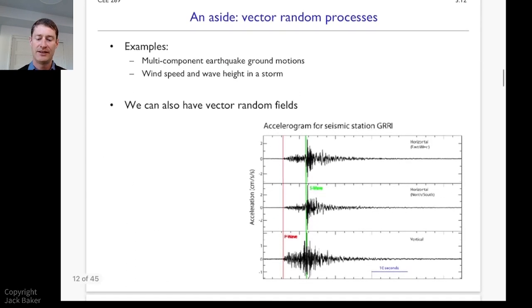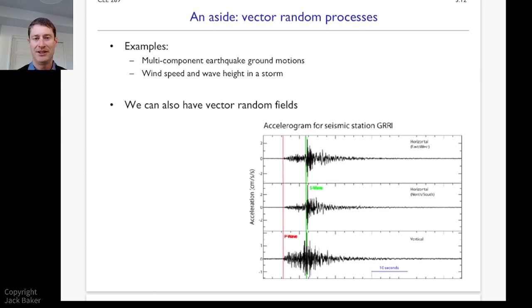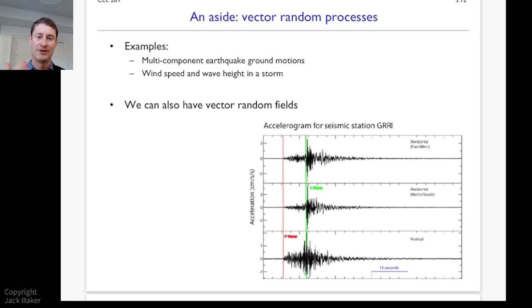A second extension is that the random process could take a vector value. Generally we think about a scalar-valued x of t, but we could think about vectors. One example would be multi-component earthquake ground motion. I drew a cartoon in the previous video of acceleration versus time, but the ground is going to shake in three dimensions in an earthquake. This figure on the slide shows a three-component recording: east-west shaking, north-south shaking, and vertical shaking.